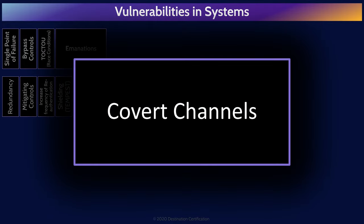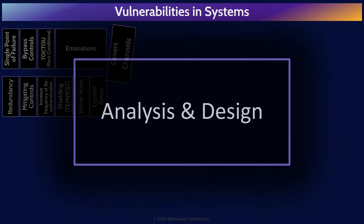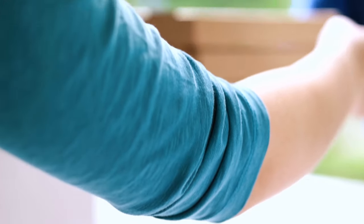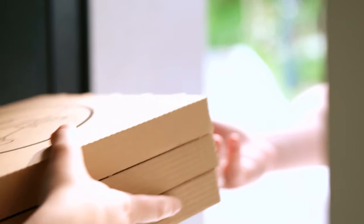The next vulnerability is covert channels, which are unintentional communication paths that can unintentionally disclose confidential information. There are two major types of covert channels — storage and timing — and storage is by far the most common. Covert channel vulnerabilities can be addressed by careful analysis of systems and processes to identify these unintentional communication paths and design controls to prevent or mitigate them. The predictive power of pizza deliveries is a great example of a covert channel.